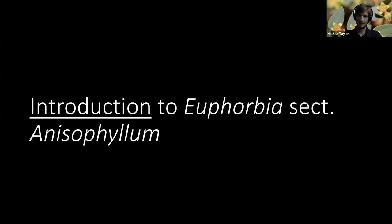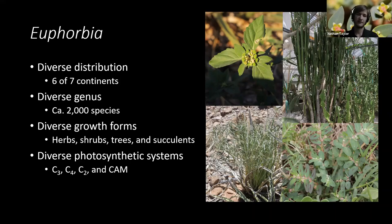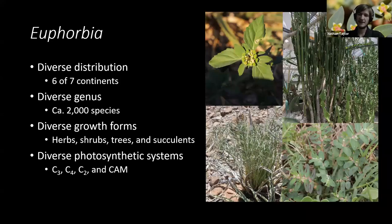So first off, what is Euphorbia? Euphorbia is a worldwide genus of about 2,000 species — it is a giant genus, one of the largest in the world. It takes on a lot of different forms, including herbs, succulents, shrubs, and trees. With that, we also have a lot of photosynthetic systems. The succulents have CAM, most herbaceous plants have C3 photosynthesis, but in the section I'm studying, they have C4 primarily, but also have a handful of species with either C3 or C2 photosynthesis.